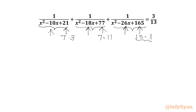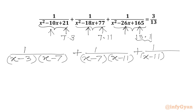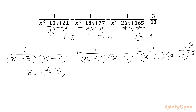So we can easily factor our denominators and write: 1 over (x minus 3)(x minus 7) plus 1 over (x minus 7)(x minus 11) plus 1 over (x minus 11)(x minus 15) equals 3 over 13. Note that x cannot be 3, 7, 11, or 15.